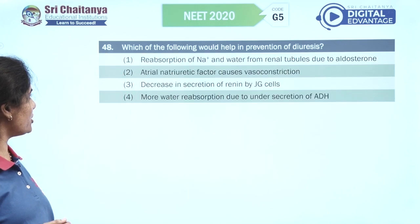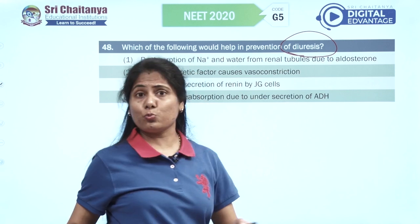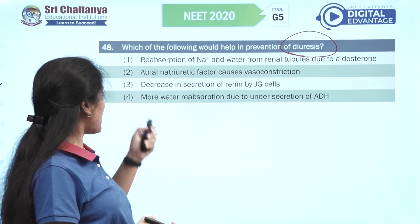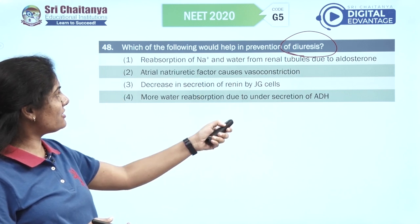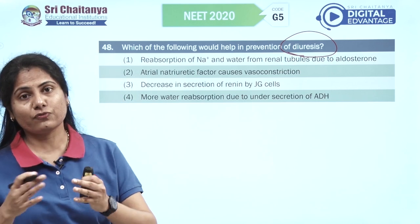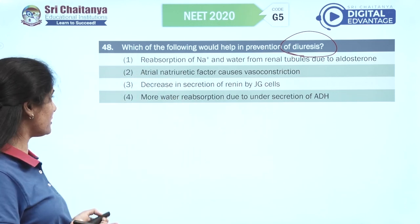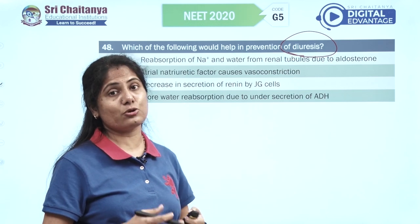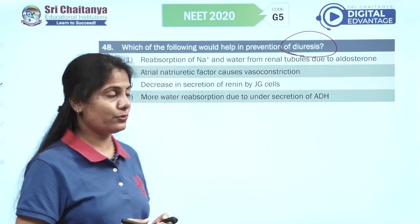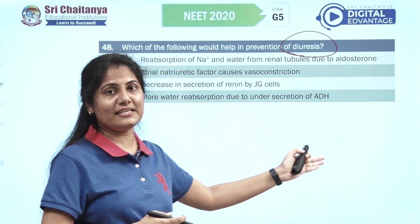Which of the following would help in prevention of diuresis? Diuresis is excess water loss through urine. Reabsorption of sodium and water from renal tubules due to aldosterone — yes, that prevents water loss. Atrial natriuretic factor is a vasodilator, not a constrictor. Decrease in secretion of renin by JG cells — it should be increased. More water reabsorption due to under-secretion of ADH — that's not it. So option one (aldosterone) is correct.